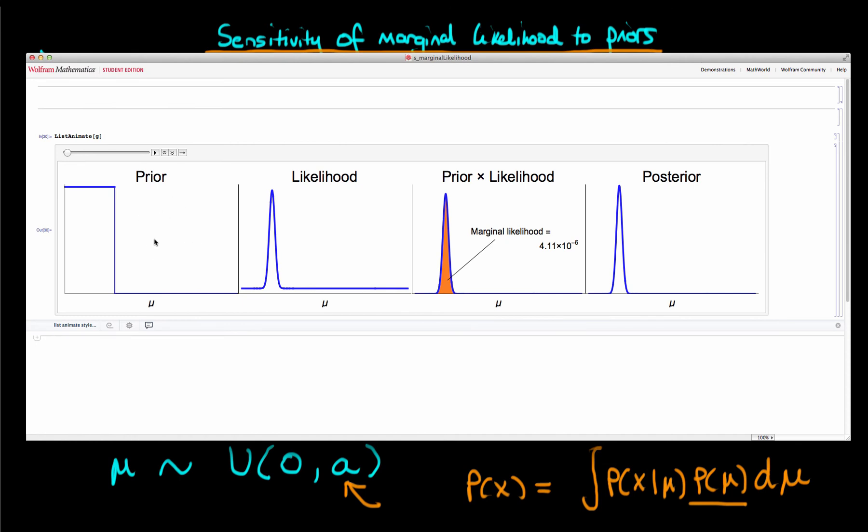So now I have a simulation that I've mocked up in Mathematica here. And the left-hand panel, we have the prior. Then we have the likelihood for our particular data. And both of these bottom axes here, or all of the axes on the horizontal here, are mu, our parameter. Then we've got our prior times our likelihood in our third column here. And the marginal likelihood is just the area underneath this curve. So I've written it on here to begin with. And then finally, we've got our posterior on the right.